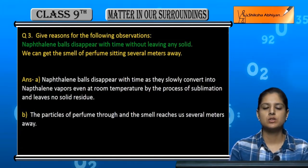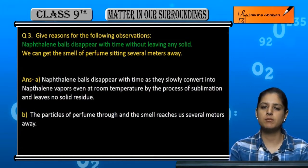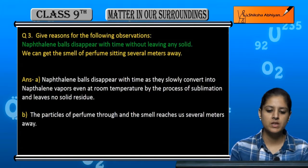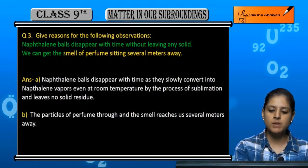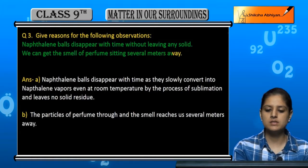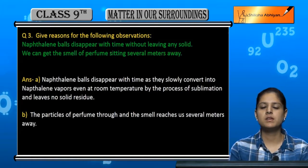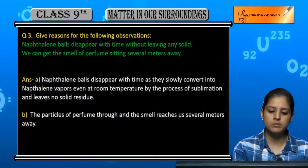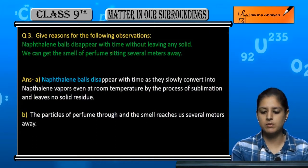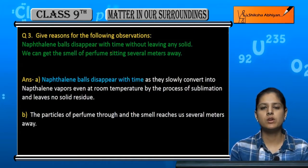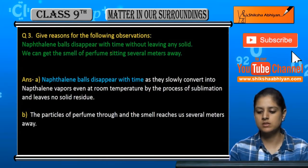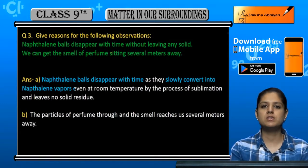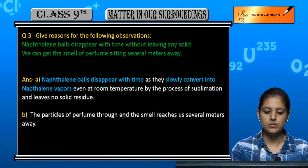Naphthalene balls disappear with time without leaving any solid. The second observation is we can get the smell of perfume sitting several meters away. Now, why do naphthalene balls disappear? Because they are volatile substances — they are sublime substances. They are slowly converted into vapors. Naphthalene balls undergo sublimation.